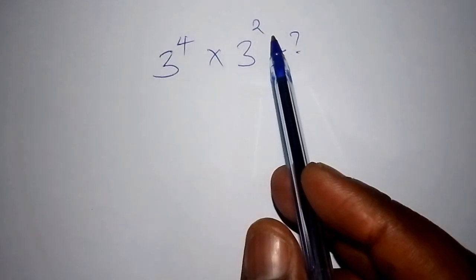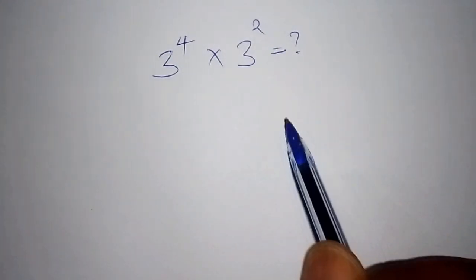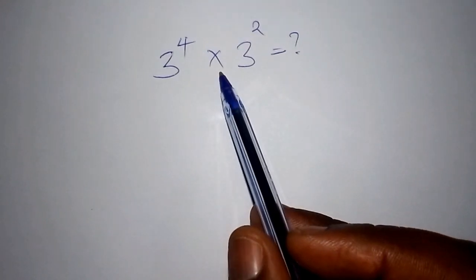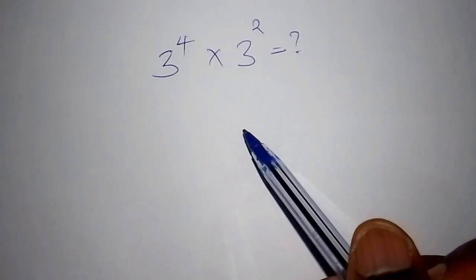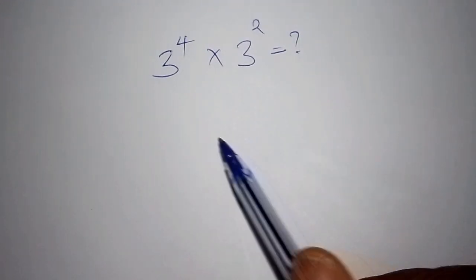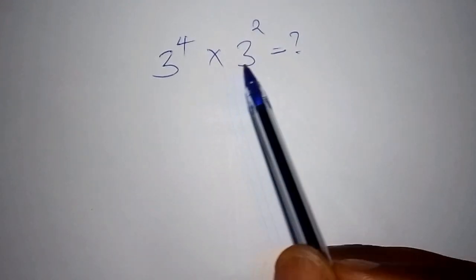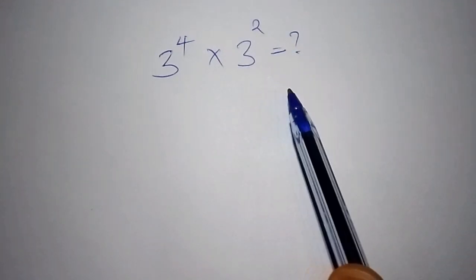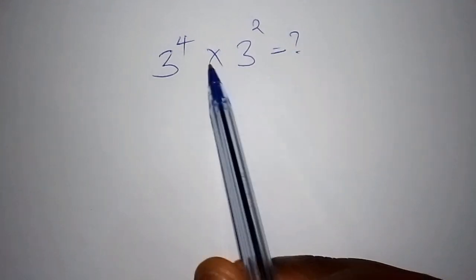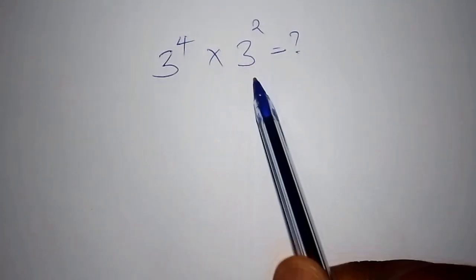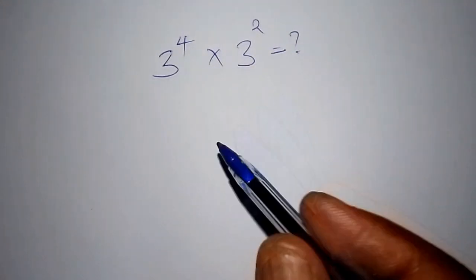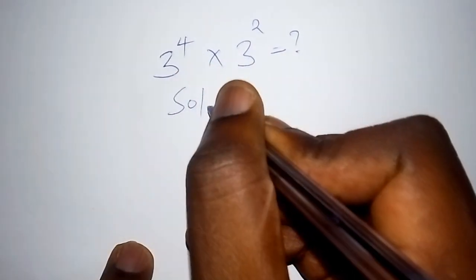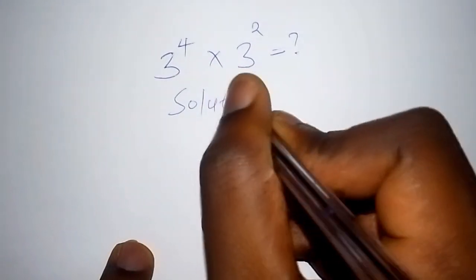In this video we shall deal with the multiplication of exponents and also the division of exponents. Our first problem is 3 to the power 4 multiplied by 3 to the power 2. To work it out, we first have to learn some of the laws of exponents that shall guide us. Let's now begin with the solution.